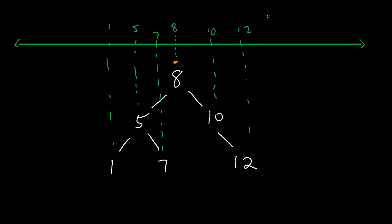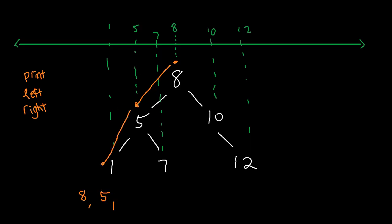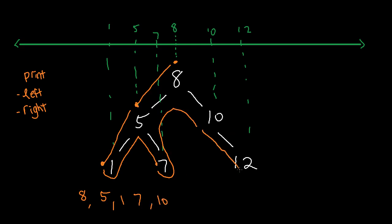A pre-order traversal means we print first, then we recursively go left, then recursively go right. So we print 8, go down and print 5, then go left and print 1. Since 1 can't go left or right, it pops back to the parent, and we try going right — printing 7. Then we get 10 and finally 12.